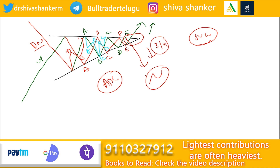In this case, we have an ascending triangle pattern. We will show entries — long position with the E wave and stop loss. For the short portion, we will show the breakout, the E wave, and the stop loss level.